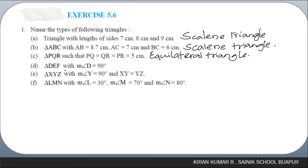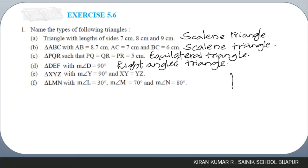Triangle DEF with the measure of angle D equal to 90 degrees — if one angle of a triangle is 90 degrees, it is called a right-angled triangle. Triangle XYZ with angle Y equal to 90 degrees and XY equal to YZ — since XY and YZ are equal, this forms an isosceles right triangle.